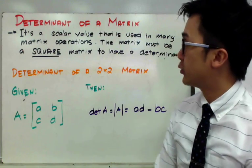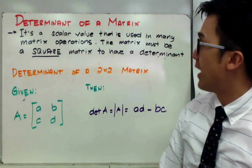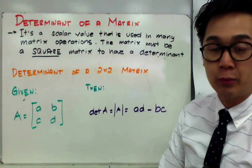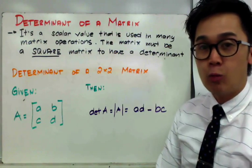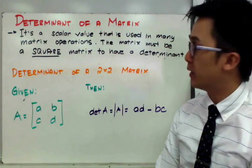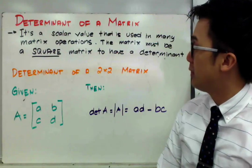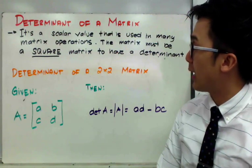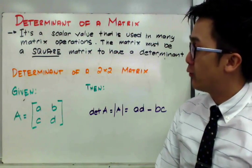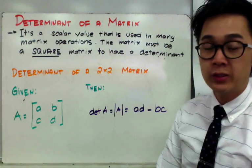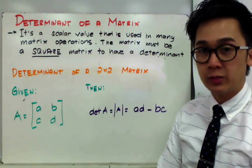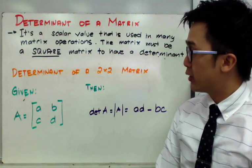The determinant of a matrix is a scalar value that is used in many matrix operations. One important thing to remember about determinants is that the determinant is only applicable for square matrices. For today, we're going to find the determinant of a 2x2 matrix and a 3x3 matrix.